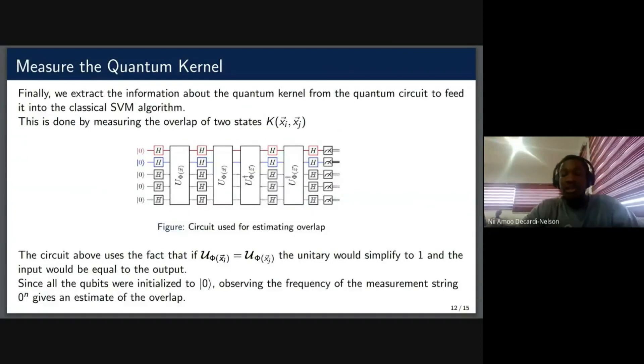So after we've computed our kernel, the next thing is to measure the kernel, measure the output, and this is done by measuring the overlap between the two states. As I mentioned earlier, the kernel behaves like, or the operation is similar to compute the inner product. So if you have two states that are the same, the inner product would be one. And if the two states are different, the inner product would be zero.